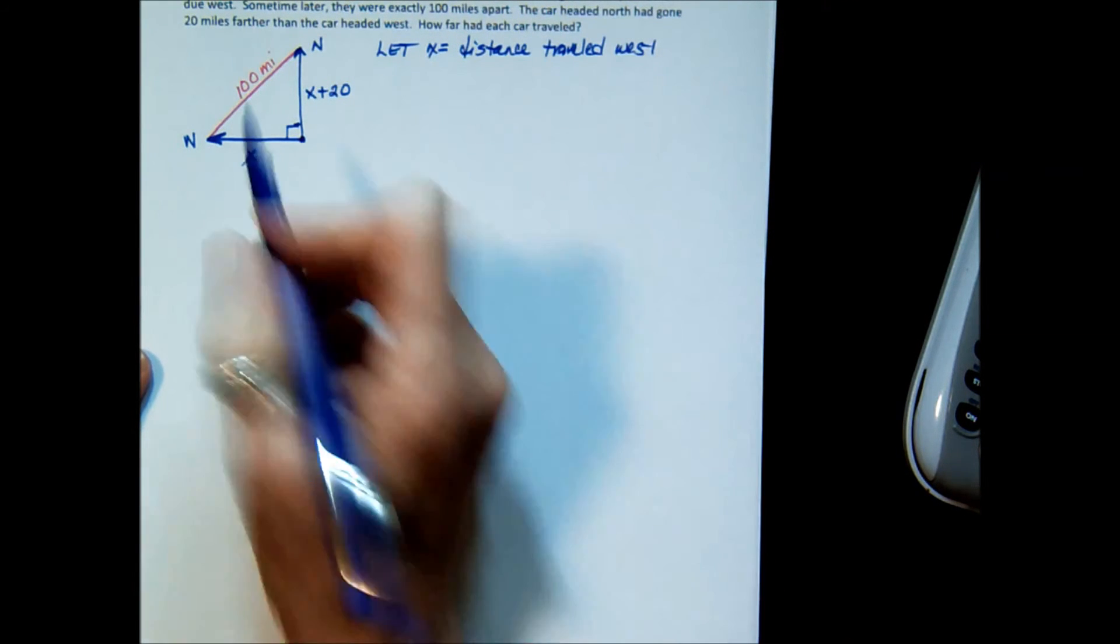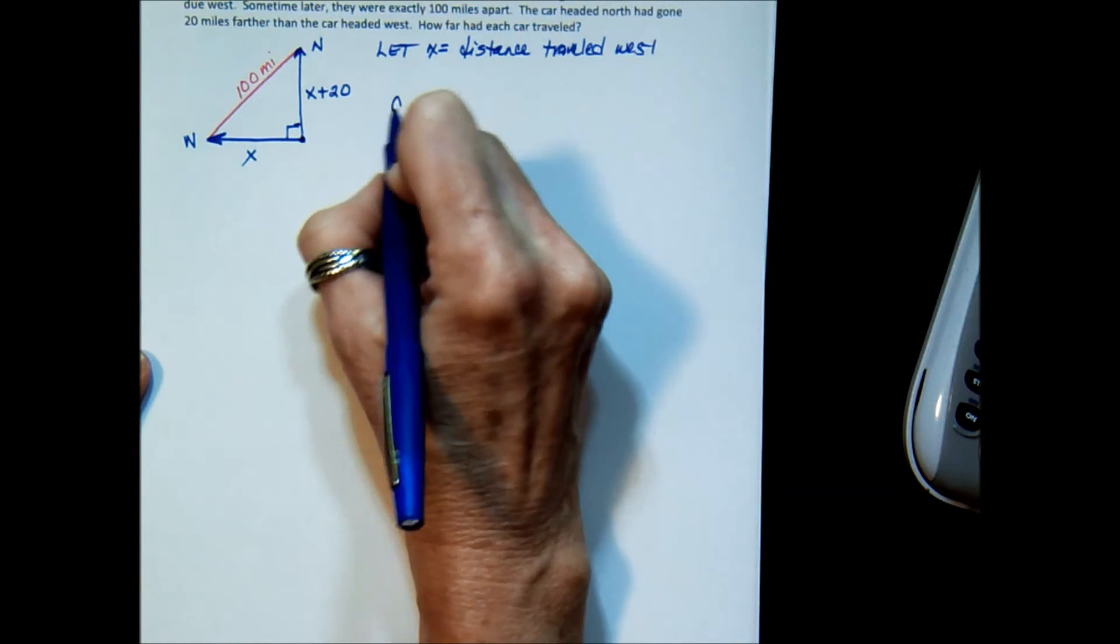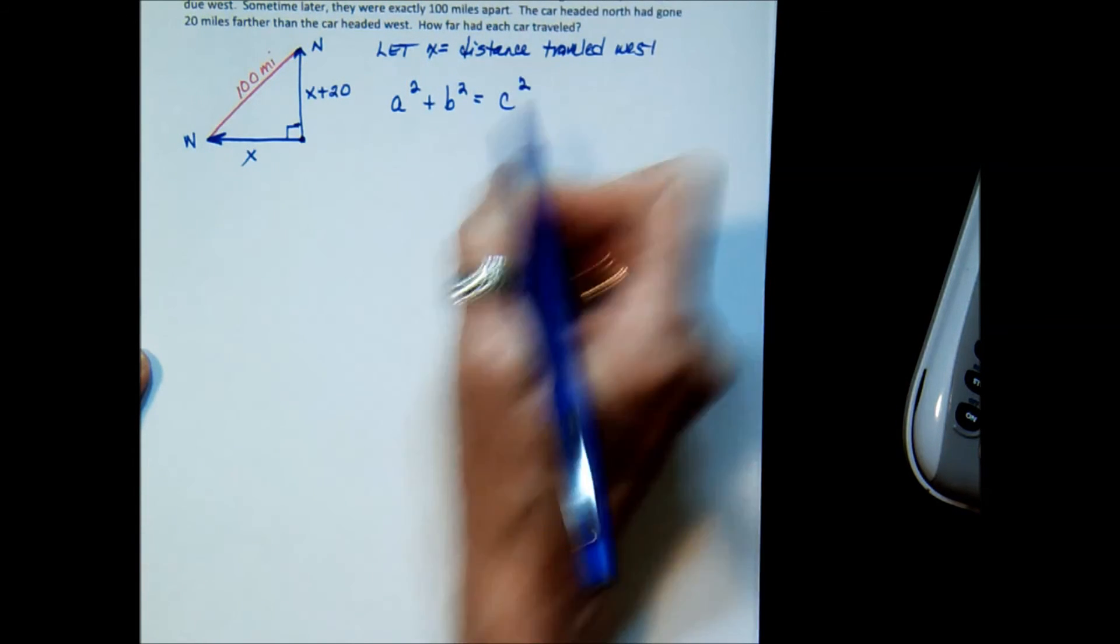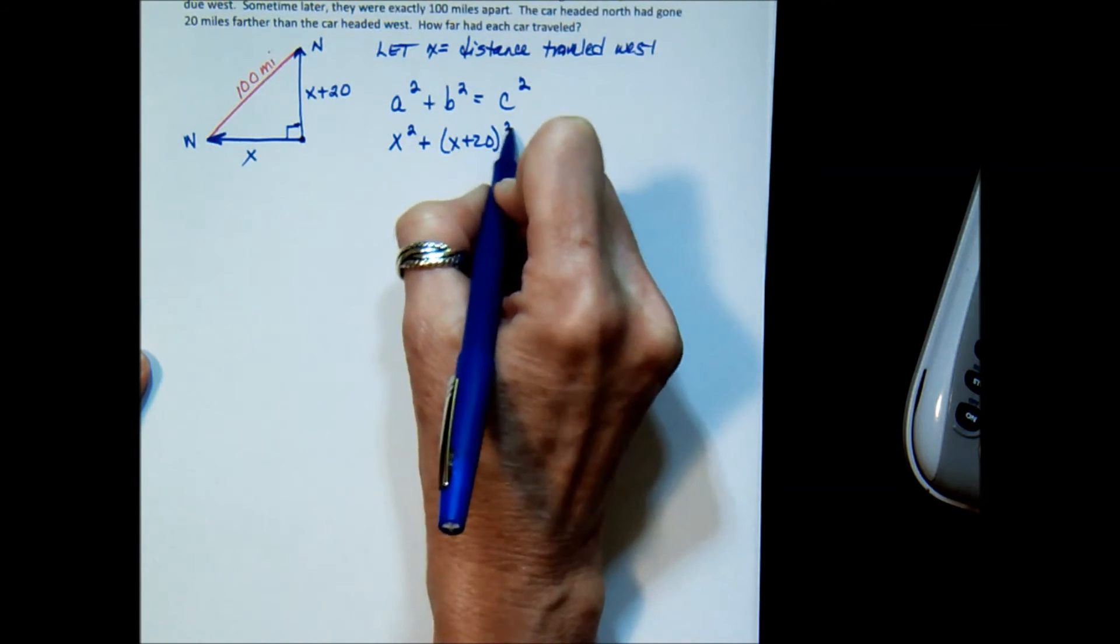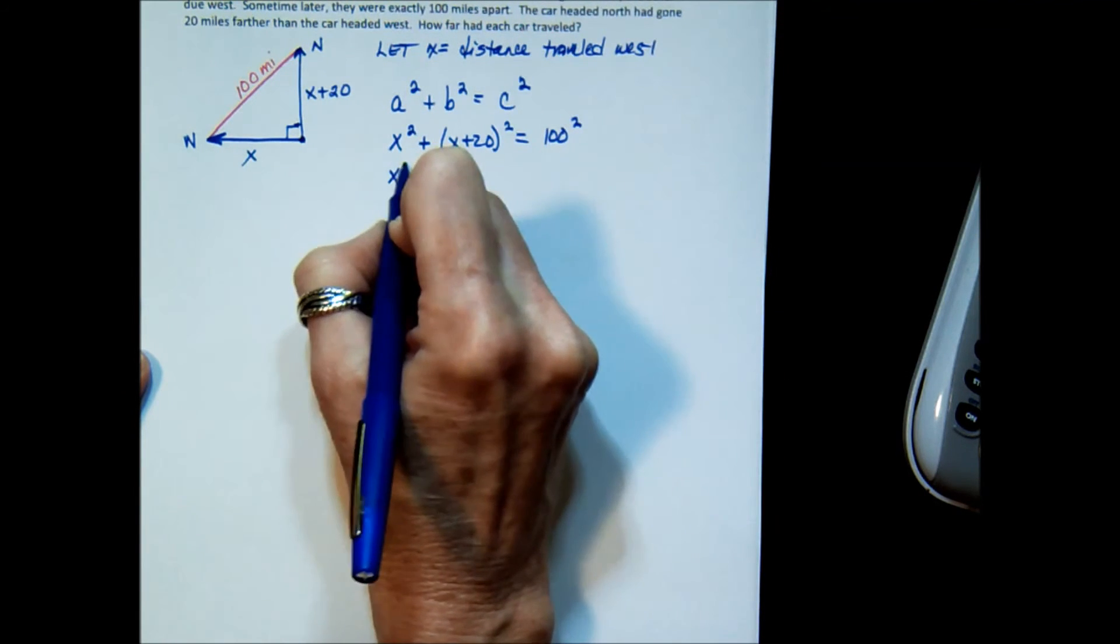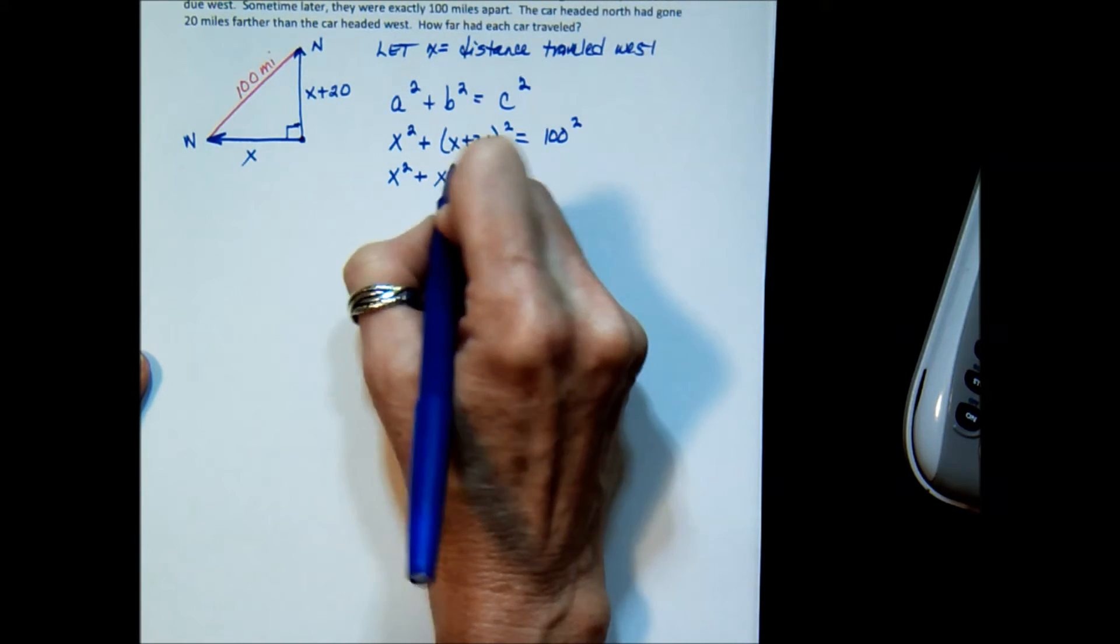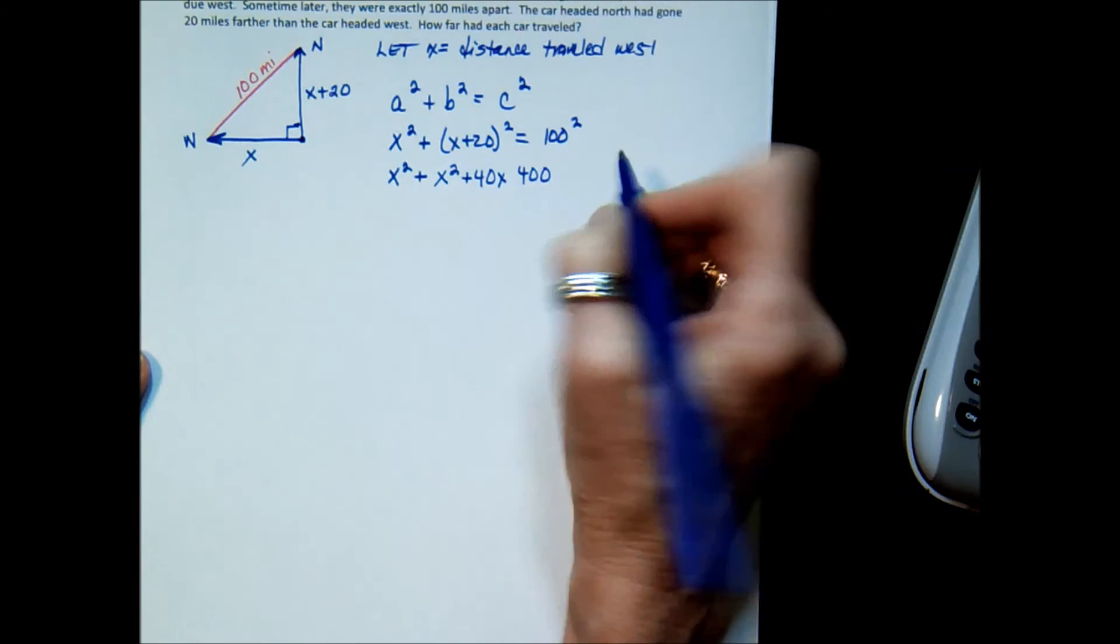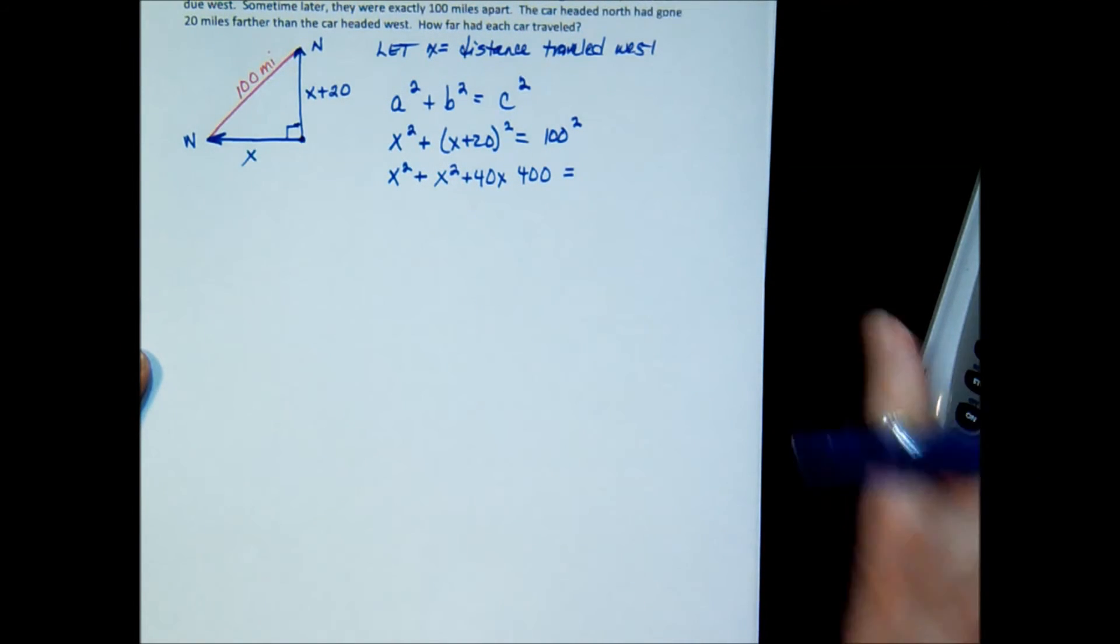So here is my a, my b, and my c. So I'm going to say a squared plus b squared equals c squared. Or x squared plus (x plus 20) squared equals 100 squared. x squared. If you factor or FOIL this out, x plus 20 times x plus 20, you're going to get x squared plus 40x plus 400 equals, when you square 100, 100 times 100, you get 10,000.